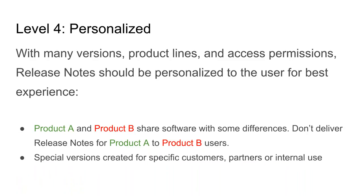The last level is personalization. When you have different versions, product lines, variants, and permissioning needs, you might have some users that need to see certain portions of release notes and others you don't want to disclose the entire set to. A simple example: if you have two products A and B sharing a piece of software, you want to make sure users of product A don't see issues that only relate to product B, and vice versa.